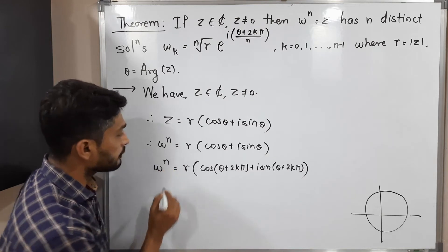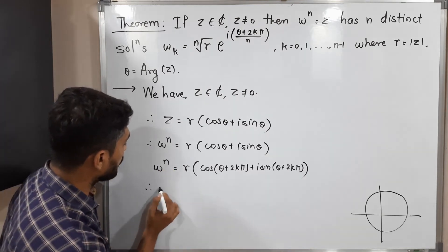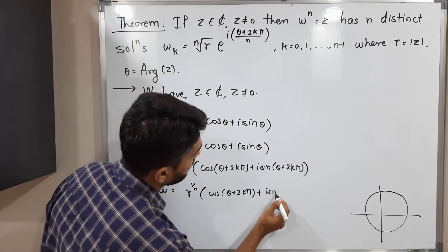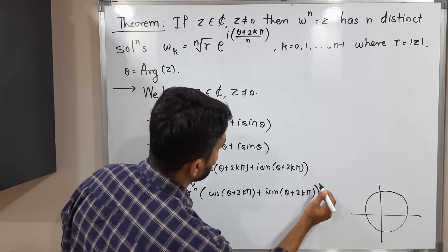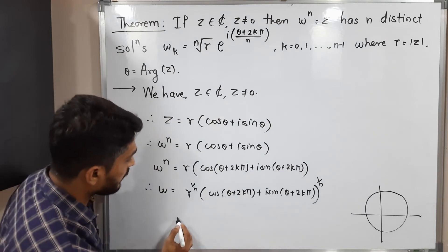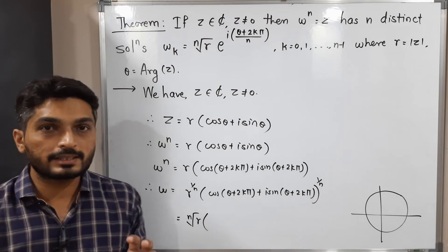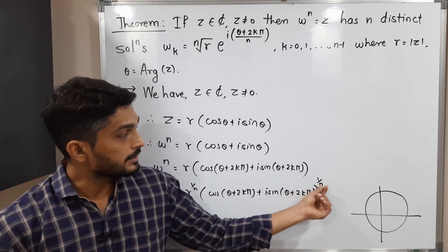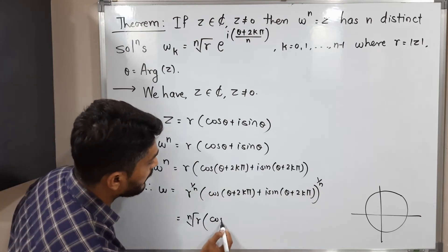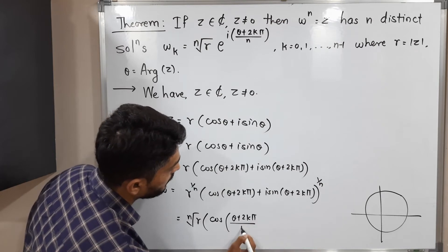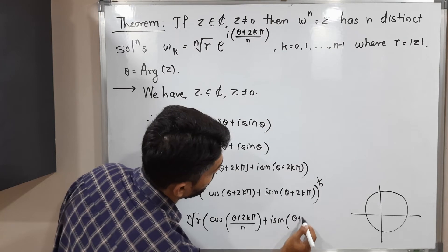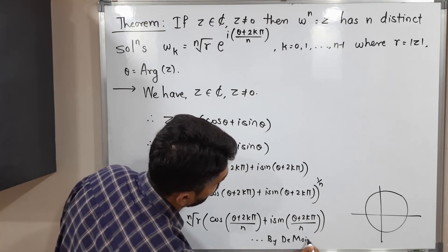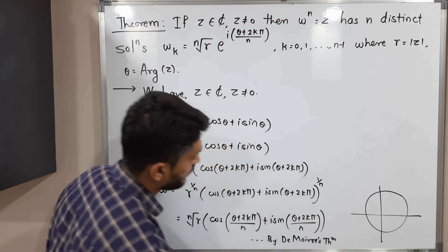Now taking the nth root of both sides: W is equal to the nth root of r, times (cos(theta plus 2k pi) plus i sine(theta plus 2k pi)) raised to 1 by n. By De Moivre's theorem, since we have a power we can write it as a multiple of that angle. Therefore, W equals the nth root of r times (cos(theta plus 2k pi)/n plus i sine(theta plus 2k pi)/n).